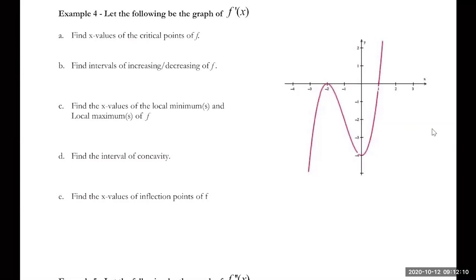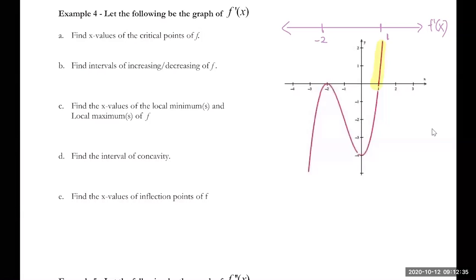If you're given the first derivative graph, superimpose a first derivative test number line onto the figure. You're going to identify all critical points. In this case, the critical points occur at negative two and at one. From there, we're reading the signs of the graph — anything above the x-axis means the first derivative is positive, and anything below is negative.